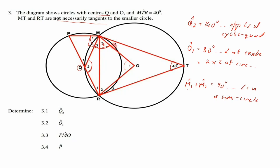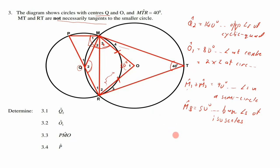We still need M3. We know O1 = 80°, and OM and OR are both radii of the bigger circle, making triangle OMR isosceles. So M3 = R2. The remaining angles are 180° − 80° = 100°, shared equally, giving M3 = 50°. Therefore PMO = 90° + 50° = 140°.